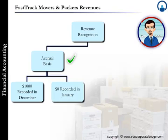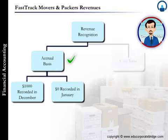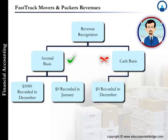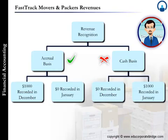After expenses are matched with these revenues, the income statement for December will show just how profitable the company was in delivering parcels that month. Under the cash method of accounting, which is no longer followed, the revenues for December would be zero and for January would be $1,000.